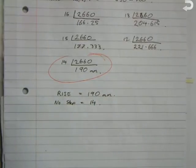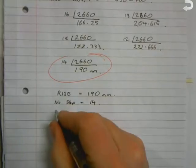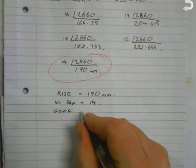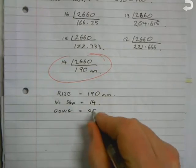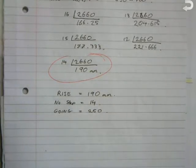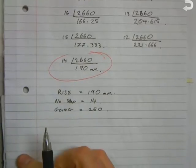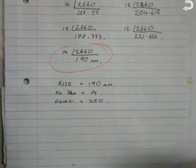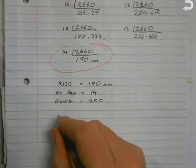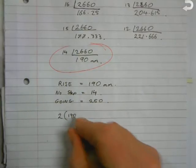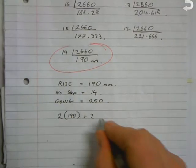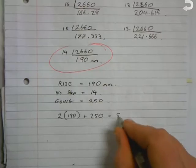Now what we're going to do for the going is write down a going of 250 mils. Where we're getting that figure is that's an optimum going for any stairs. Now we're going to put this all into a formula to make sure that going works with the rise that we're given. So the formula then is twice the rise, which is 190, plus 250 is equal to 550 to 700.